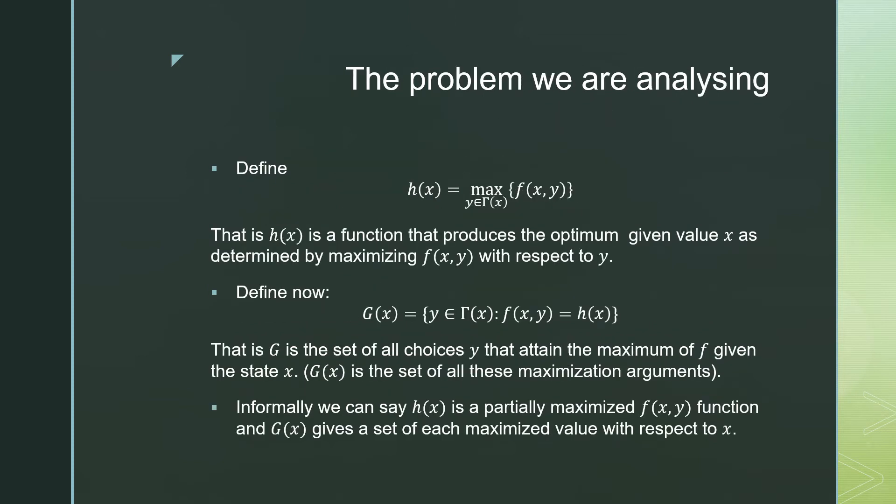In terms of the problems that we're analyzing, define h(x) as the partial maximization problem of f(x, y). Notice how h is a function of x so we're optimizing with respect to y. So this function h is a function that produces an optimum given a value x as determined by maximizing f(x, y) with respect to y.